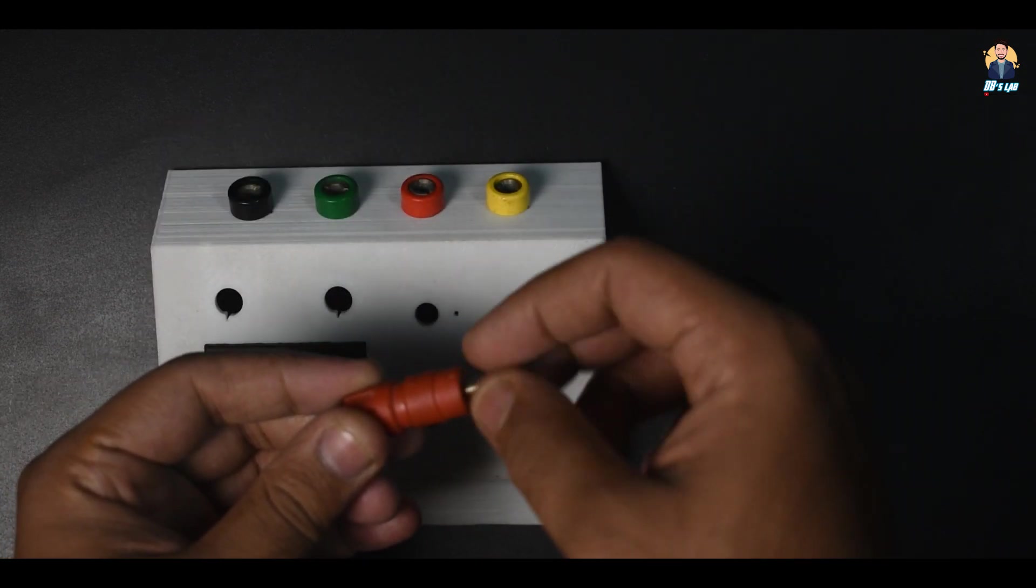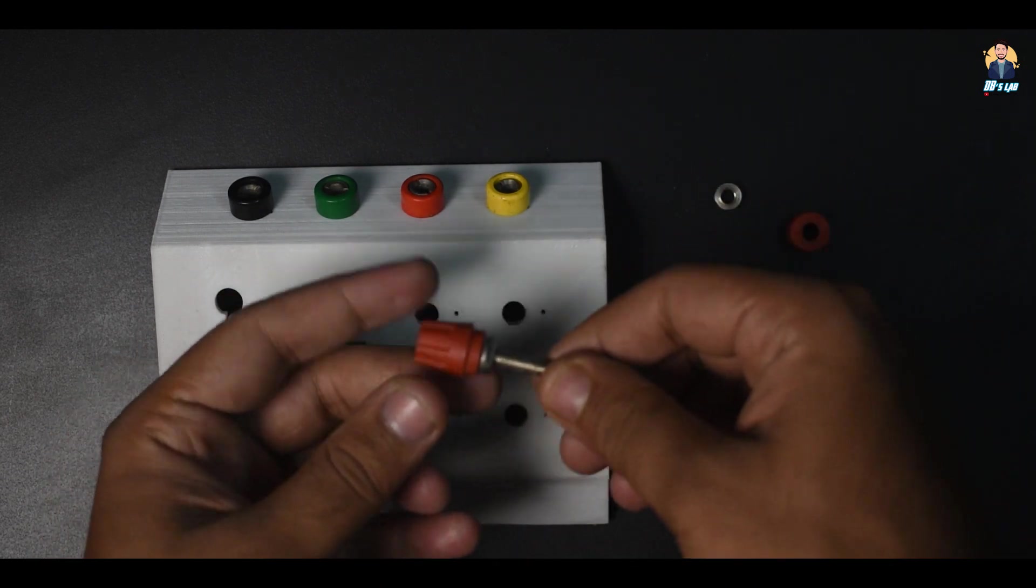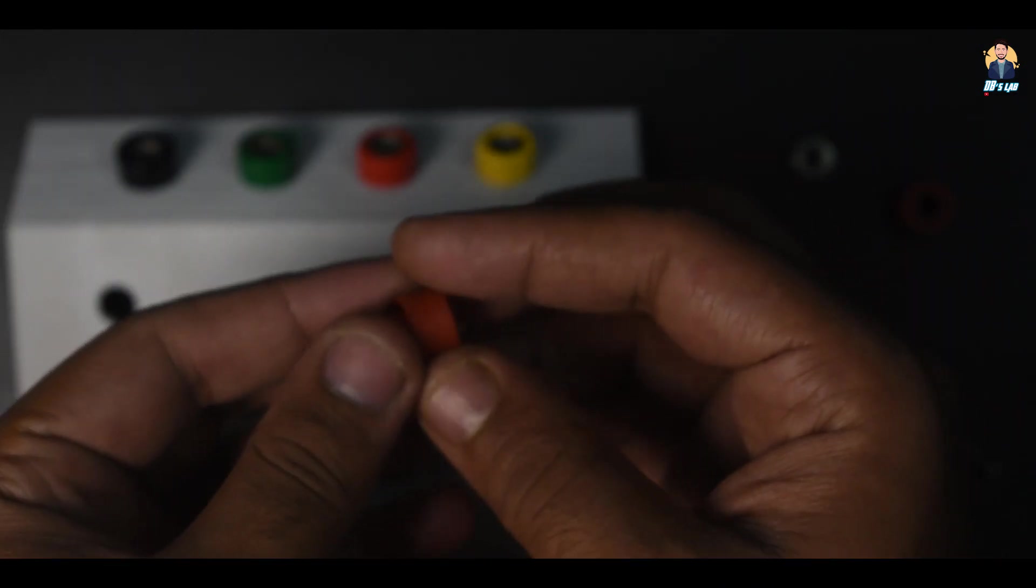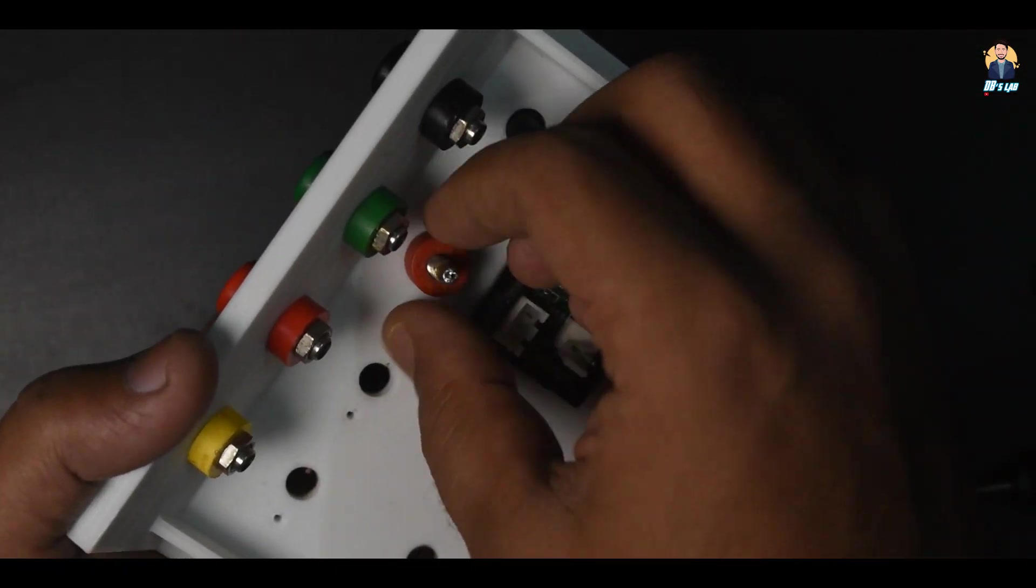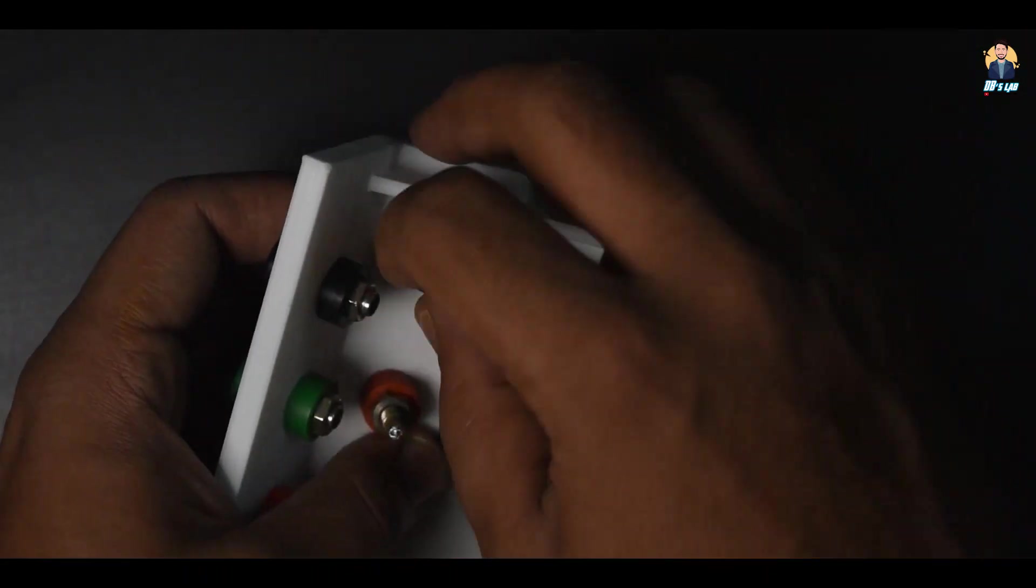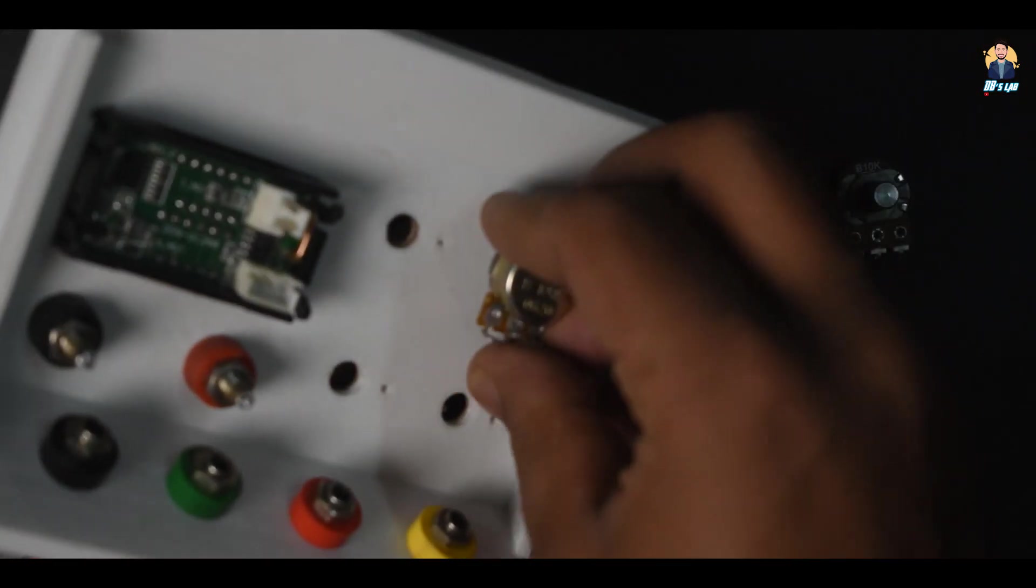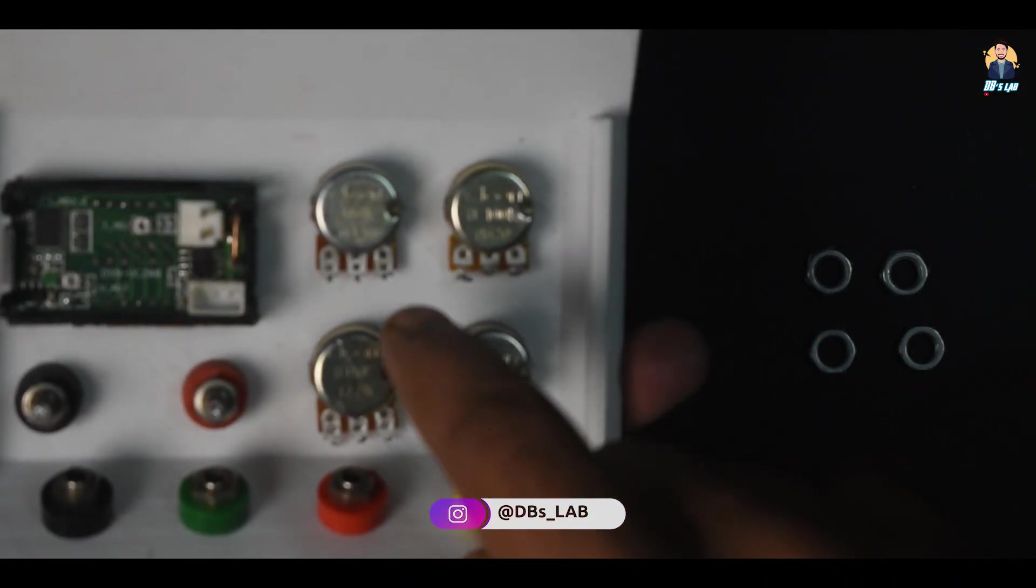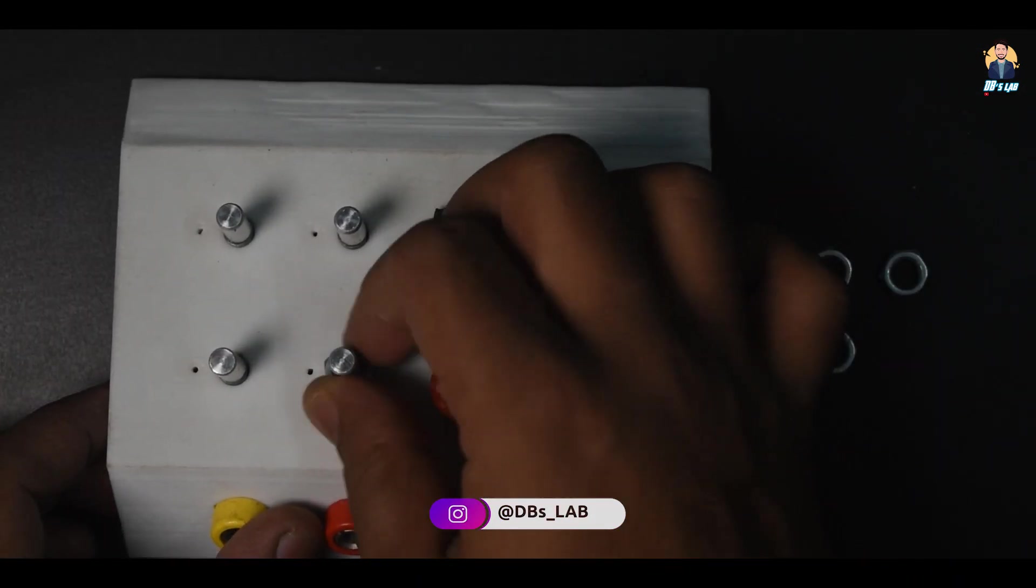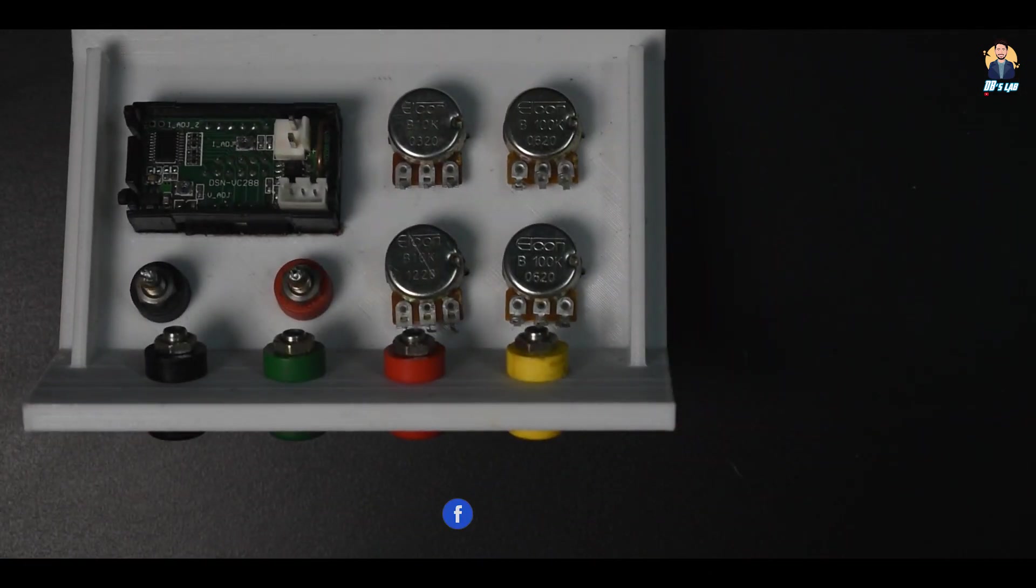The binding posts go in as shown in the video. Now attach the 10k and 1k pots by simply screwing in and use provided nut to tighten. After completing it will look like this.